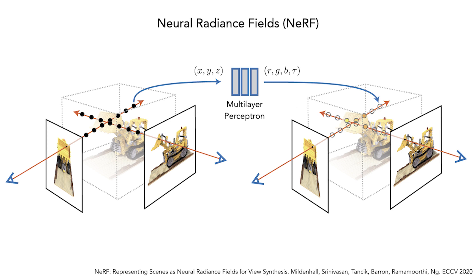NeRF, or Neural Radiance Fields, is a popular neural view synthesis technique based on volume rendering. It uses a neural network to output the density of 3D points along a ray and the color of light emitted by those points towards the camera, and alpha composites them to get the overall color of the ray.